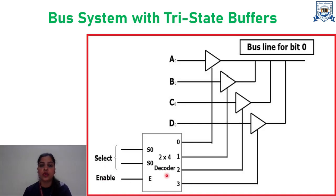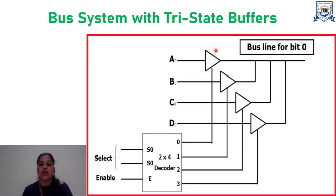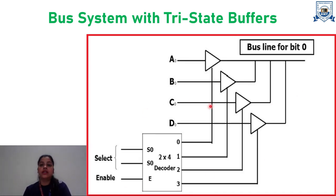One way to ensure that no more than one control input is active at a given time is to use a decoder. When the enable input of this decoder is 0, then all of its four outputs will be 0 and the bus line will be in the high-impedance state, simply because all four buffers are disabled. When the enable input of this decoder is active, one of the three-state buffers will be active depending on the binary values in the select input of the decoder. In short, to construct a common bus for four registers of n bits each, each using three-state buffer, we need n circuits with four buffers as shown in this figure. Each group of four buffers receives one significant bit from the four registers. Each common output produces one of the lines for the common bus for a total of n lines.